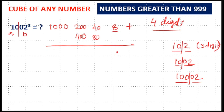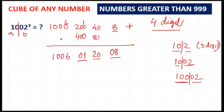For the 4-digit number 1002, split as a = 10 and b = 2. 10 cube = 1000, 2 cube = 8. 10² × 2 = 200, 2² × 10 = 40. Double of 40 = 80, double of 200 = 400. Writing 2 digits at a time: 8 → write 08; 40 + 80 = 120 → write 20, carry 1; 200 + 400 + 1 = 601 → write 01, carry 6; LHS is 1000 + 6 = 1006. So the answer is 1006012008.